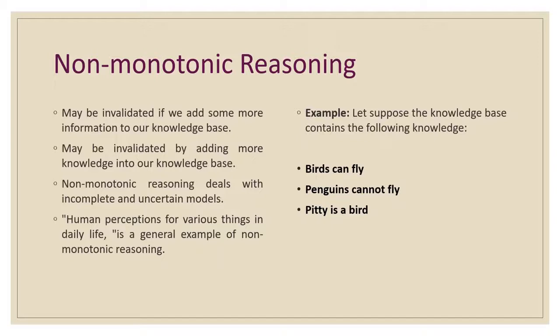An example of non-monotonic reasoning: birds can fly; penguins cannot fly; Pity is a bird — so the initial conclusion is that Pity can fly. However, if we add one more sentence to the knowledge base, that Pity is a penguin, then the conclusion becomes that Pity cannot fly — which is an invalidated conclusion. The advantage of non-monotonic reasoning is that in the real world, systems such as robots can be navigated using it, and non-monotonic reasoning can choose facts or make assumptions as needed. Thank you all for listening.